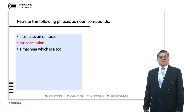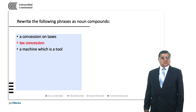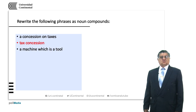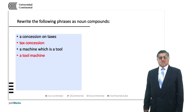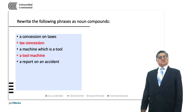A machine which is a tool — again, we have a machine that works as a tool. So we have 'a tool machine'. In plural, 'tool machines'. Again, we are pluralizing the second word. Next: a report on an accident.